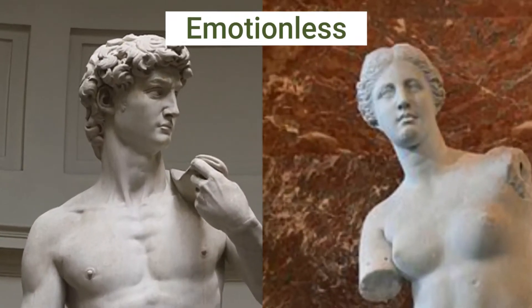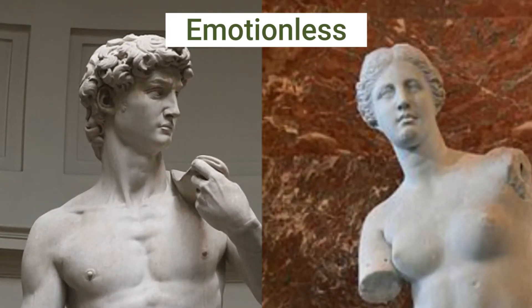They said that emotion shows weakness, so if you look at ancient Greek statues, they always show a perfect body image but are usually emotionless. Now people are more relaxed about emotions — they can talk about how they feel with people they know.